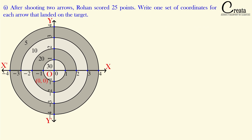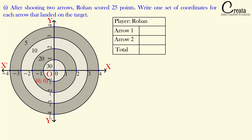Let's take down the first part of the question. It is given that after shooting 2 arrows, Rohan scored 25 points. This means one arrow landed in the 5-point zone and the second arrow landed in the 20-point zone. The question asks us to write one set of coordinates for each arrow that landed on the target — very simple, we just have to state the coordinates.